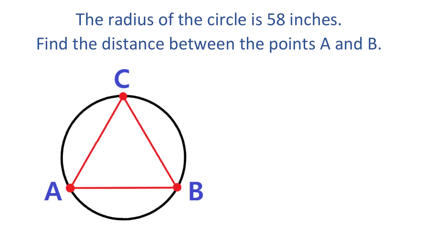In this video, we have a circle with three equidistant points on the circle. The line segment AB equals AC and equals BC. The radius of this circle is 58 inches. We need to find the distance between the points A and B.